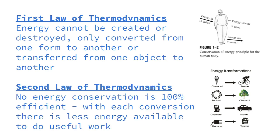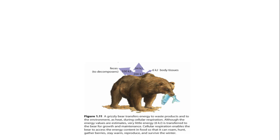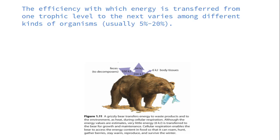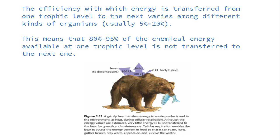The second law of thermodynamics states that we cannot conserve energy 100% — most energy is lost to heat. When we transfer energies between trophic levels, it varies depending on the organisms. We usually have 5–20% transferred from one trophic level to the other, which means we keep and use 80–95% of the energy and don't transfer that out.